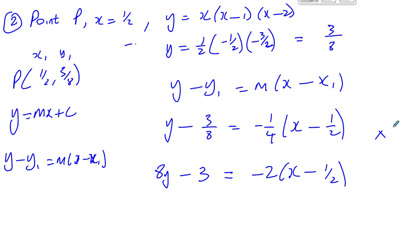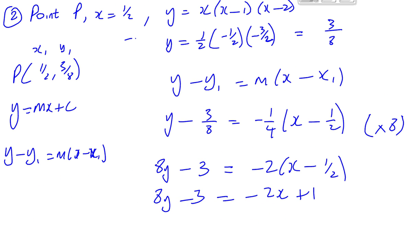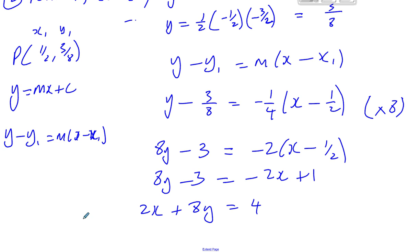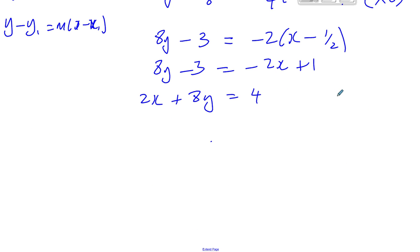So I have 8y minus 3 equals minus 2x plus 1. Remember you want it in the form ax plus by equals a constant. So let me now add 2x to both sides and add 3 to both sides. I'll get 2x plus 8y equals 4. And in its simplest form, we can divide everything by 2. So we end up with x plus 4y equals 2.